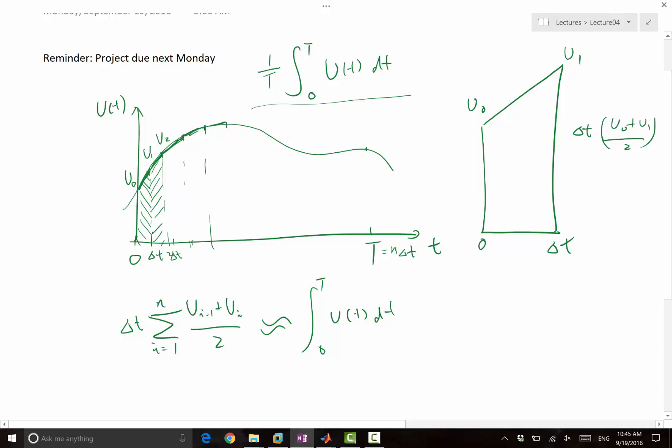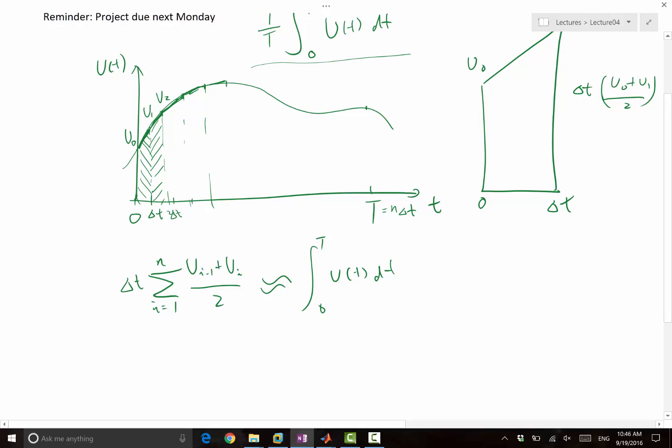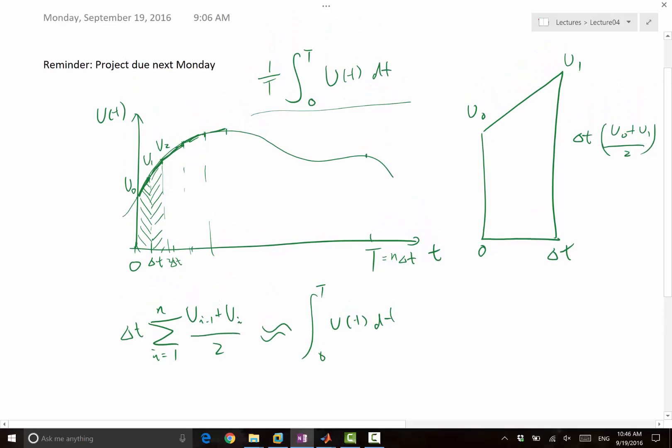And if you want, you can go back and do Taylor series analysis and convince yourself this is actually a second order approximation. Yeah, at least the second order approximation depends on how smooth the function is, right? So this is what you can use to do the projects.